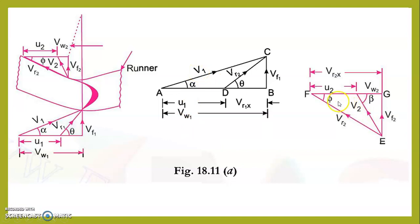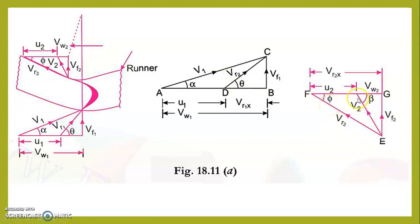Considering the outlet triangle, we have phi and beta. Phi is the angle made by Vr2 — the relative velocity at the outlet — with the direction of motion of the blade U2. So if we are dealing with Vr1 we use theta, and if we are dealing with Vr2 we use phi. The angle made by the absolute velocity at the inlet is alpha, and at the outlet is beta.